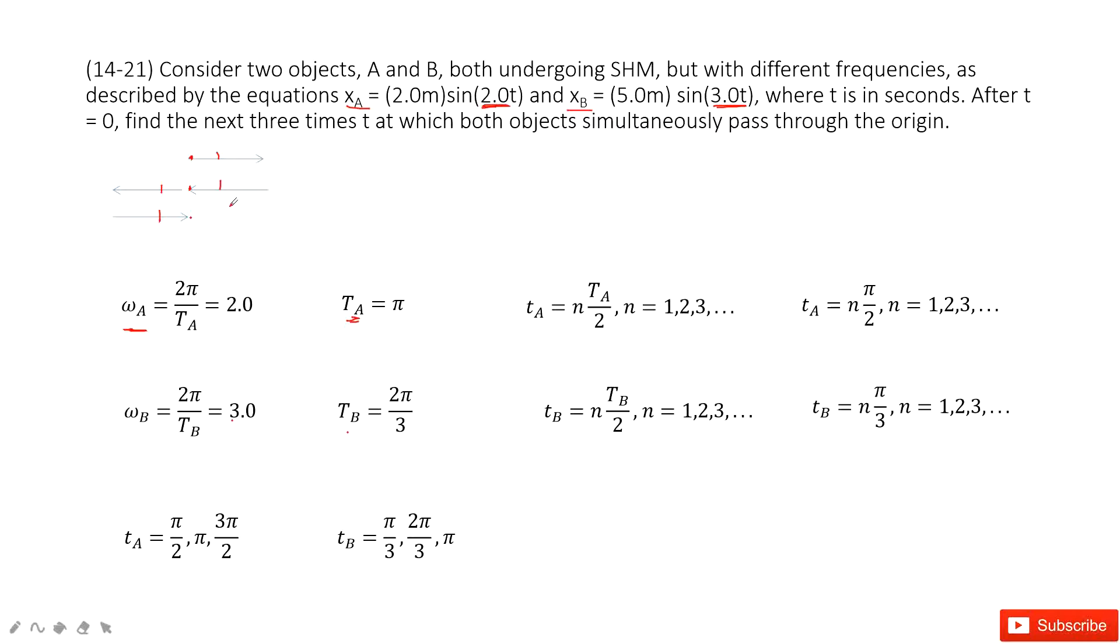We just talked about how every half period it goes through the origin. So t_A equals π times n, where n tells us which time it is - every half of the period. When we solve it, we get an answer that looks like this.